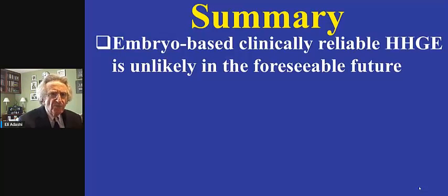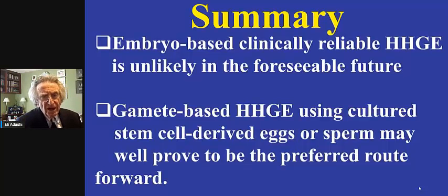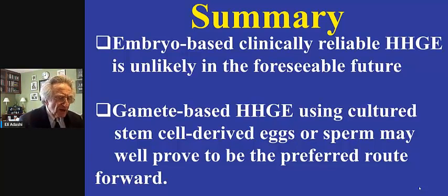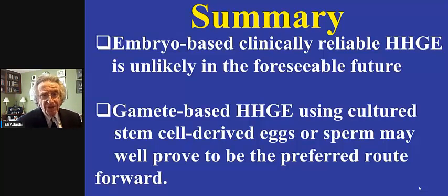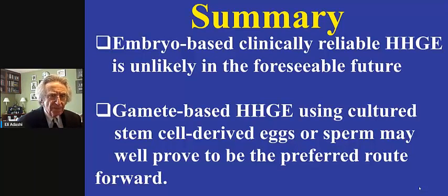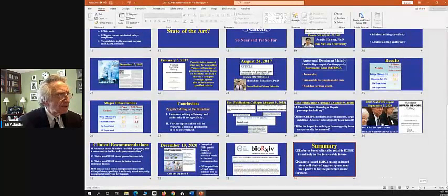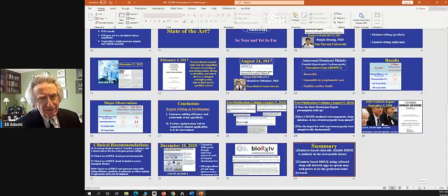So in summary, embryo-based clinically reliable heritable human genome editing is unlikely in the foreseeable future. Gamete-based heritable human genome editing using cultured stem cell-derived eggs or sperm may well prove to be the preferred route forward, because it would provide for a far more controlled environment, it would not entail an embryo but rather a gamete grown in a dish of which multiple plates can be derived, and therefore quality control can for the first time be meaningfully exercised. Thank you very much for your attention, and I look forward to an additional conversation with you.